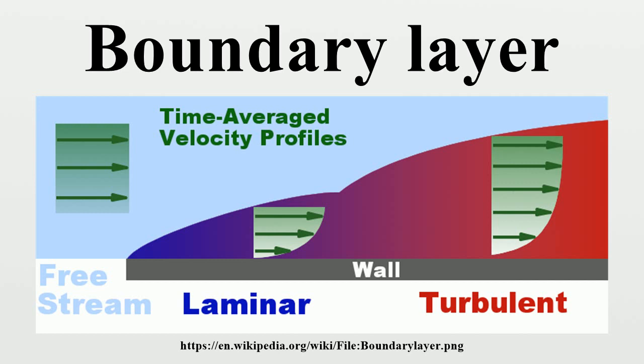The pressure distribution throughout the boundary layer in the direction normal to the surface remains constant throughout the boundary layer, and is the same as on the surface itself. The thickness of the velocity boundary layer is normally defined as the distance from the solid body at which the viscous flow velocity is 99% of the free-stream velocity. Displacement thickness is an alternative definition stating that the boundary layer represents a deficit in mass flow compared to inviscid flow with slip at the wall. It is the distance by which the wall would have to be displaced in the inviscid case to give the same total mass flow as the viscous case. The no-slip condition requires the flow velocity at the surface of a solid object be zero and the fluid temperature be equal to the temperature of the surface.